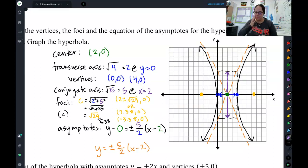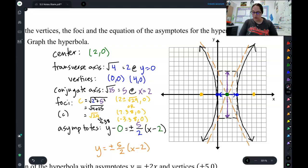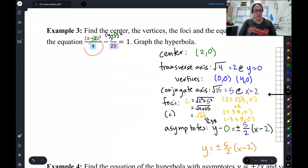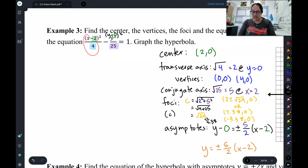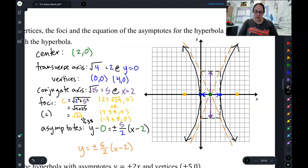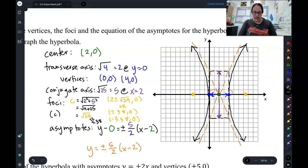Let's see how you did. So, first thing I found was the center point. So, I found that to be at 2, 0. Then I did the very first denominator, is my transverse axis, square root of that and get 2. Now, because that is paired with my x, that means it goes side to side. So, 2 side to side, and those are my vertices and my transverse axis.